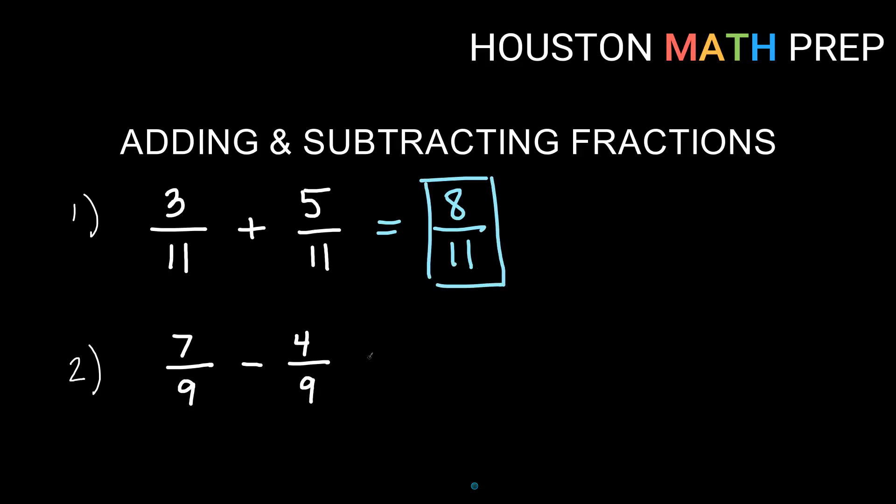For the second one, it's a similar thing. We have 9 on the bottom in each of these. So our answer is going to be over 9. And we just do the math on the top, 7 minus 4. Just be careful. This is a different operation. Subtract. So we get 3.